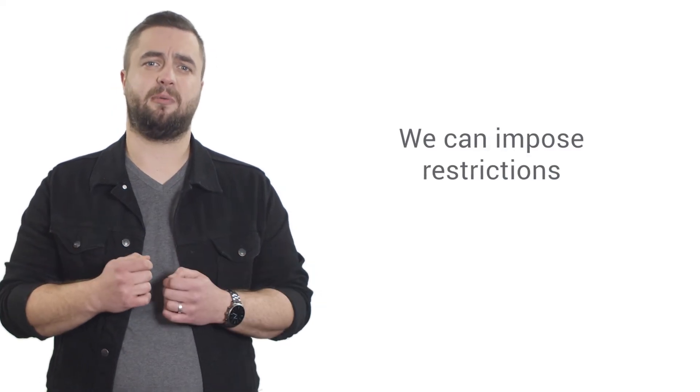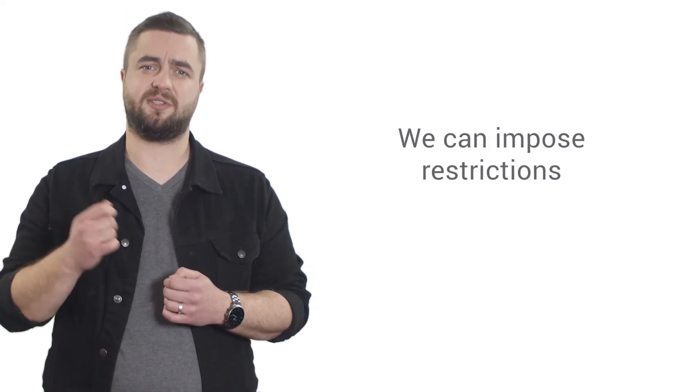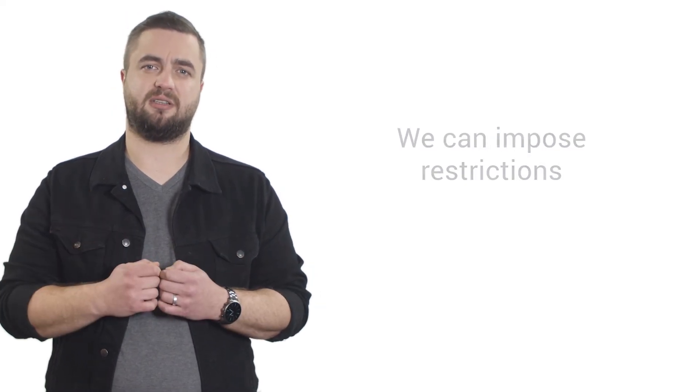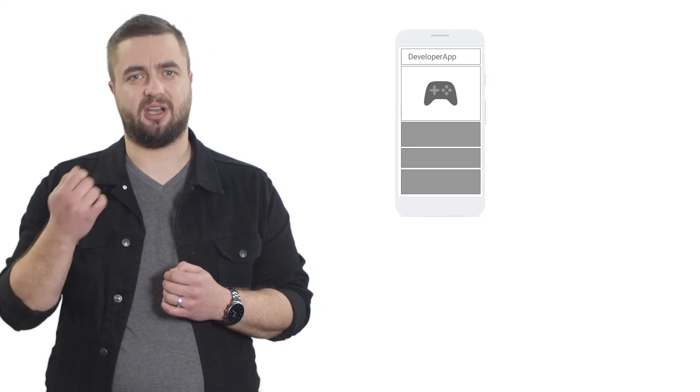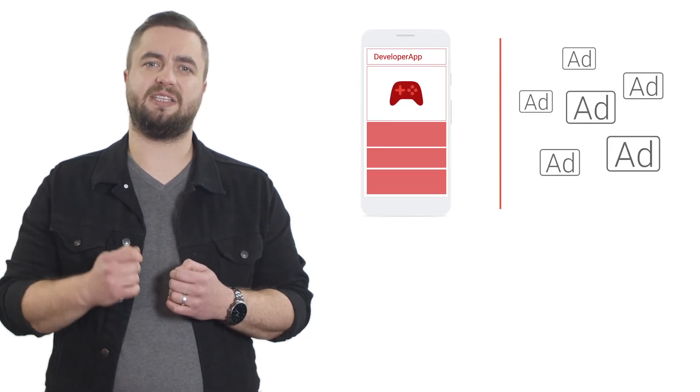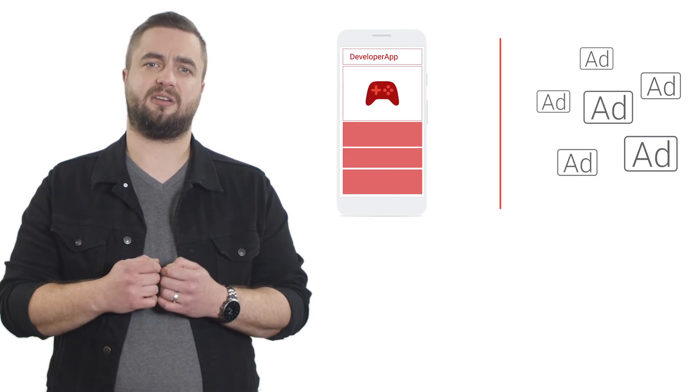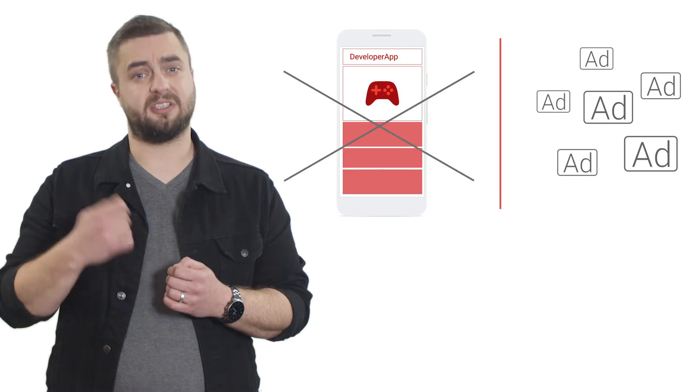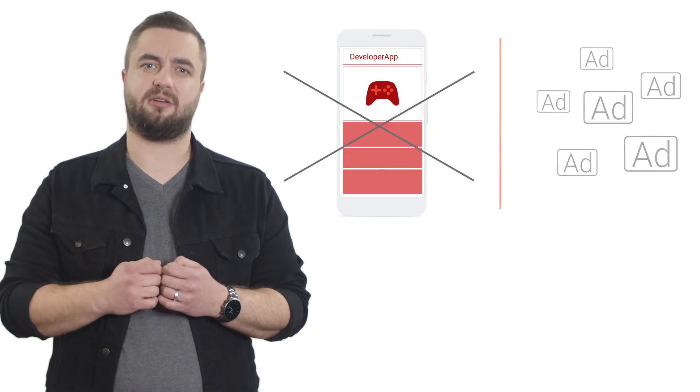If we determine that publishers have deceptive navigation on pages with Google ad code, we can impose restrictions on the ability of the publisher to receive certain sources of advertising. If your content is labeled with a Google publisher policy violation, Google may block ads from appearing against your content, or suspend or terminate your account.